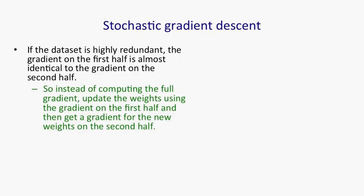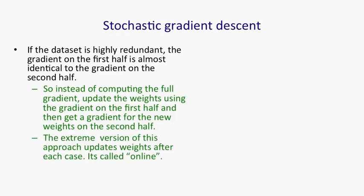You'll be much better off computing the gradient on a subset of the data, then updating the weights, and on the remaining data, computing the gradient for the updated weights. We can take that to extremes and say we're going to compute the gradient on a single training case, update the weights, and then compute the gradient on the next training case using those new weights. That's called online learning.